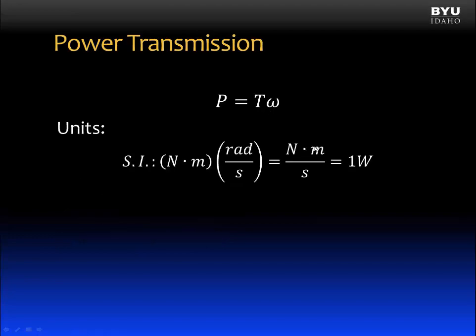The units are in SI units first. For a torque, Newton meters. For the angular velocity, the units are radians per second. This produces units of Newton meters per second, which is also equivalent to a watt.